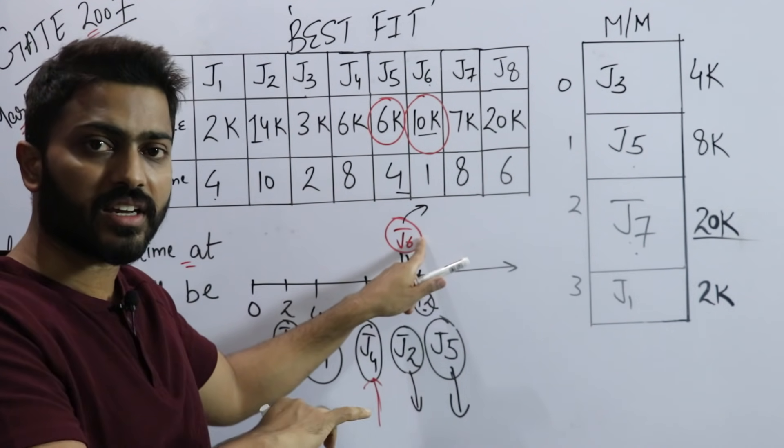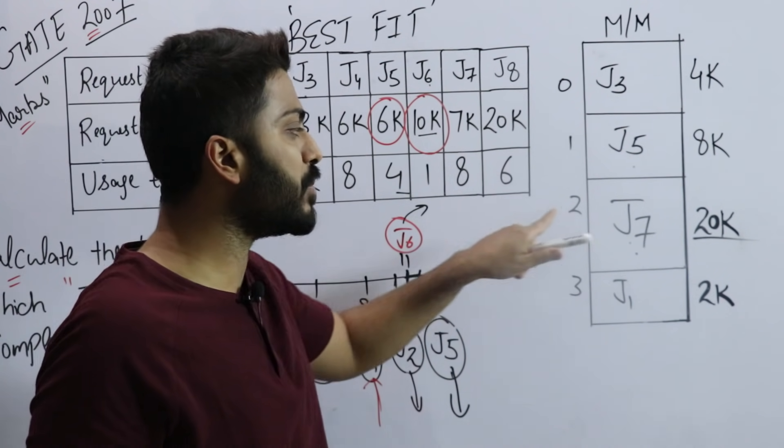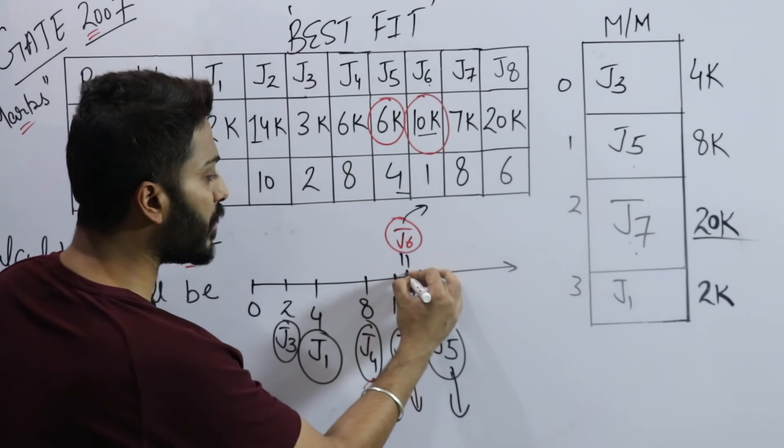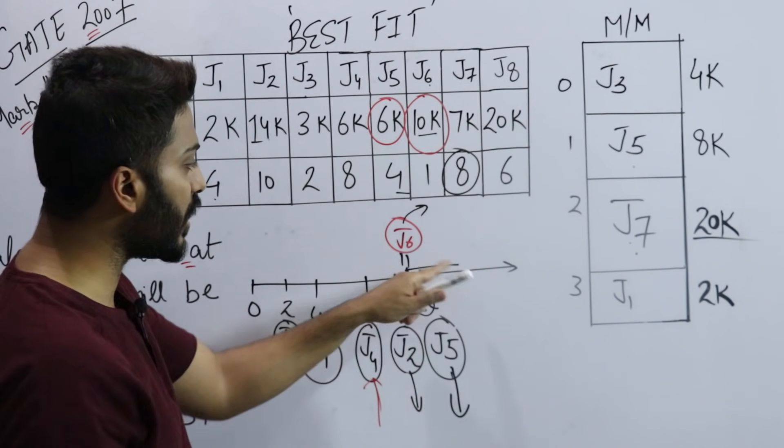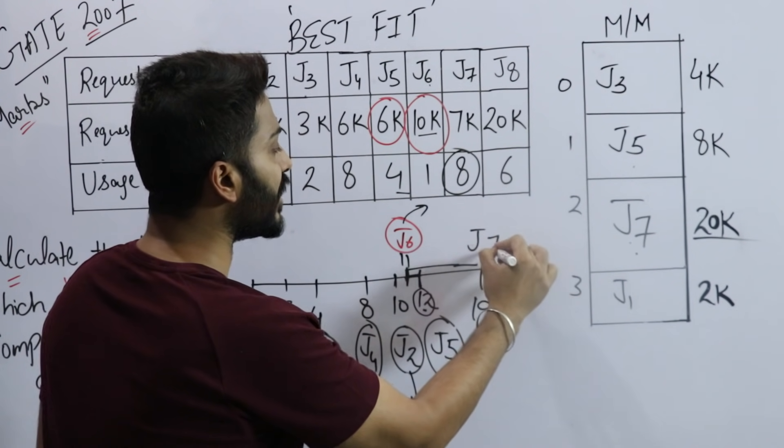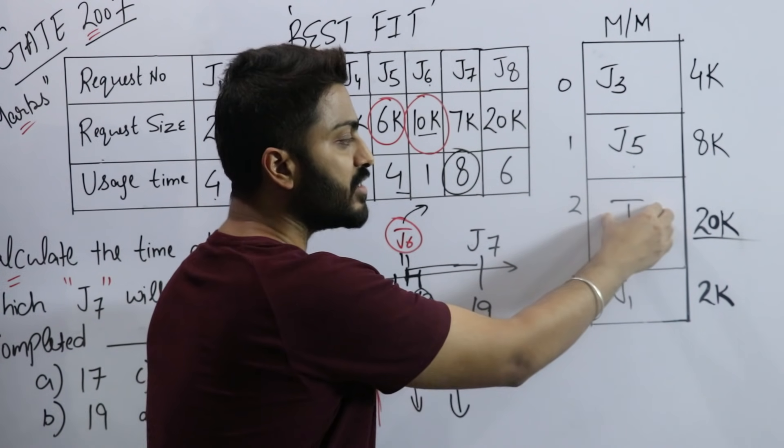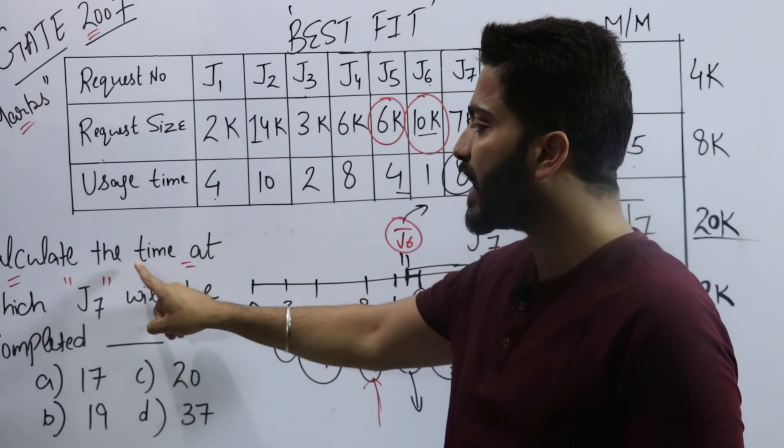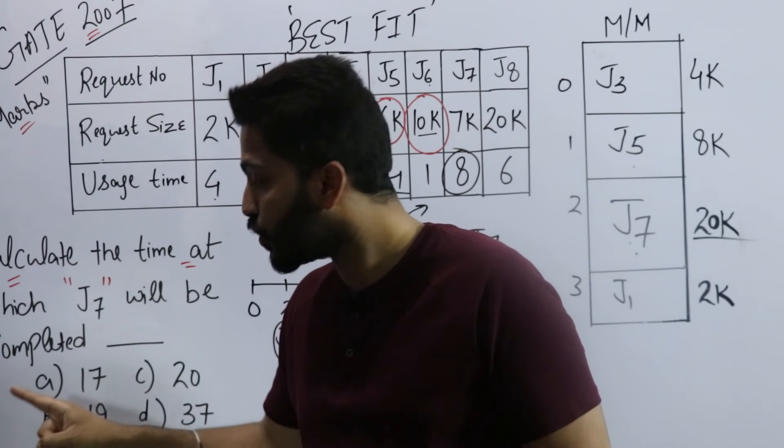No, no - at time 11, you don't know the future. At this point in time, this slot is free, so we have to place J7 here. When the 20k slot became free at time 11, don't keep it idle for 1 second. At time 11, place J7 inside because this slot is free. J7 needs 8 time units, so 11 plus 8 equals 19.